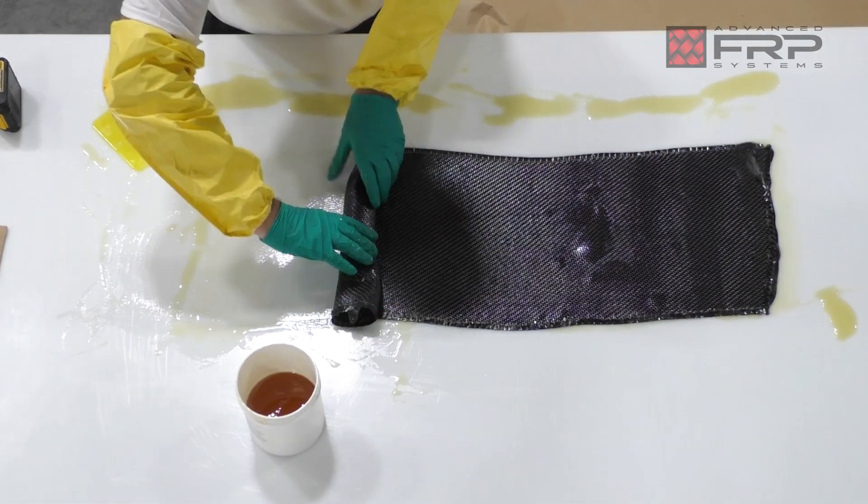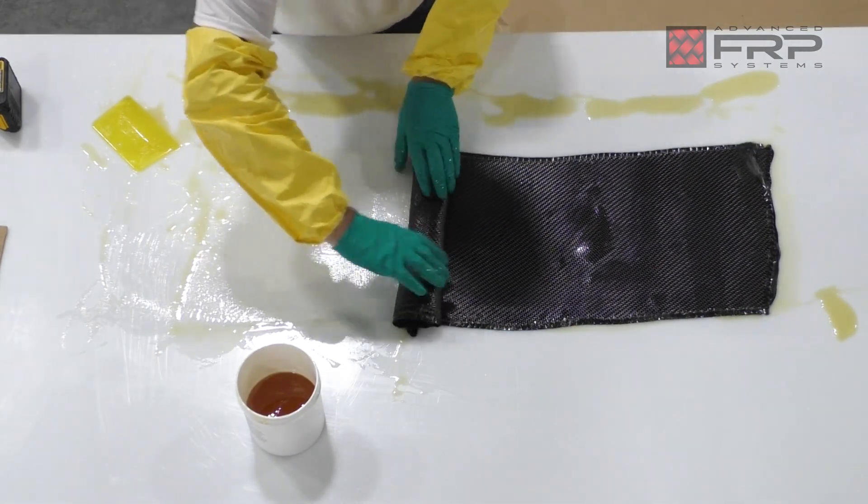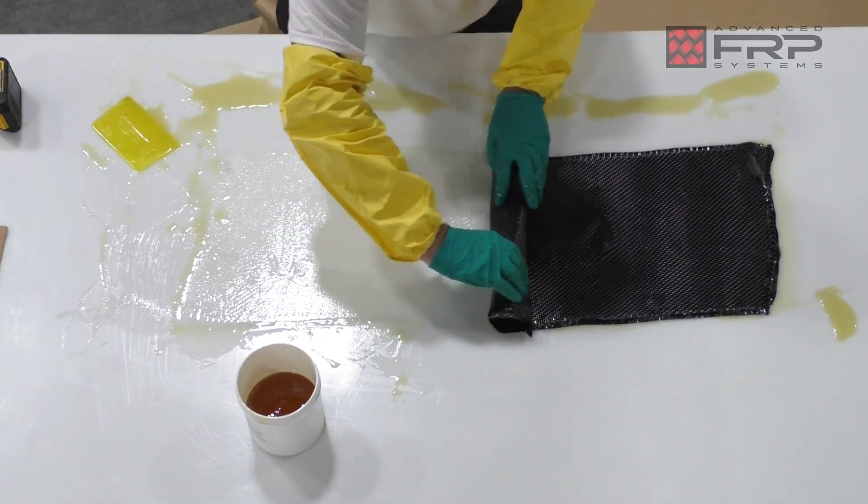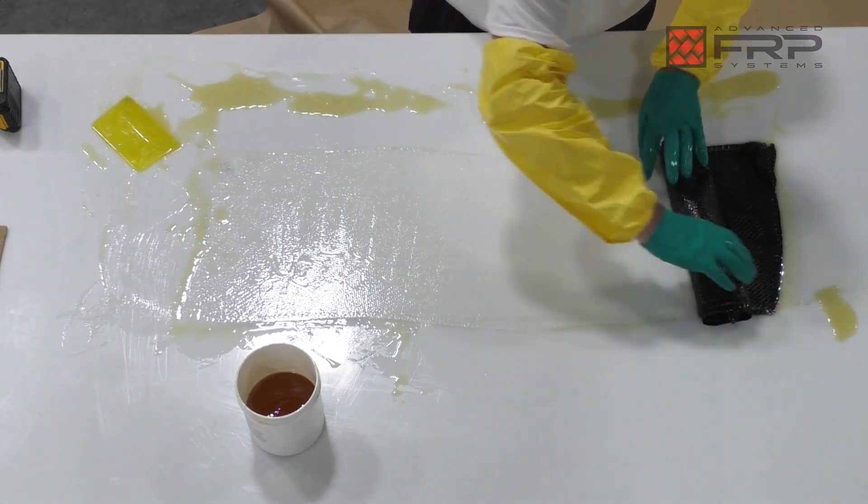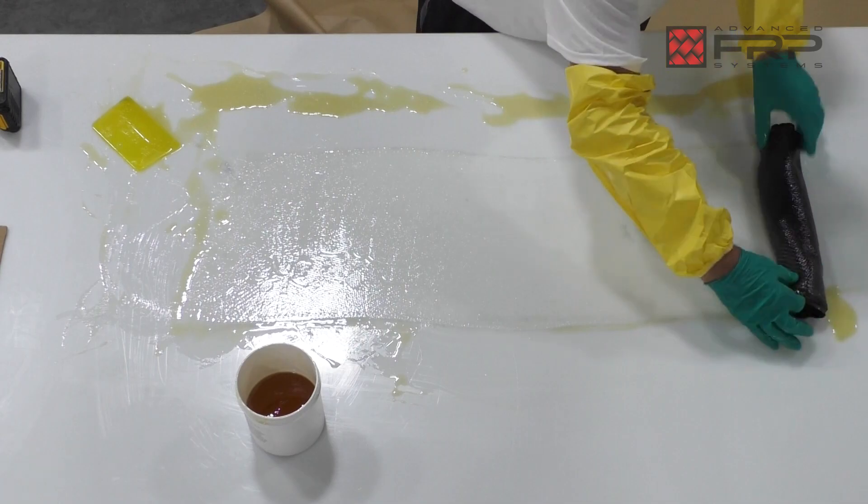Once excess saturant has been removed, carefully roll up the saturated carbon fiber, ensuring the edges are as straight as possible. Gently remove any loose threads from the edge of the fabric.